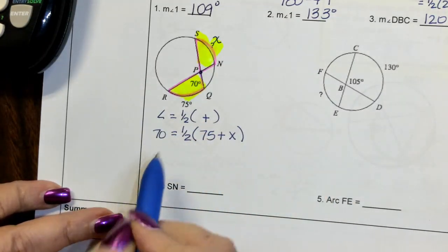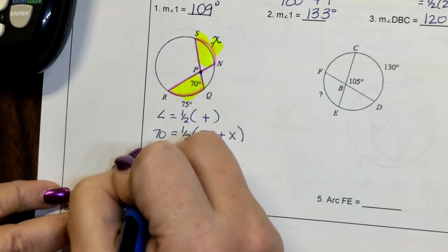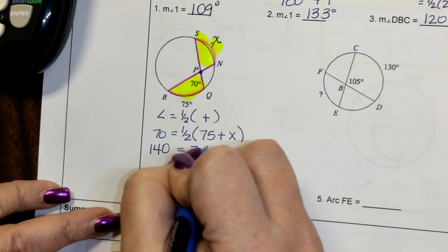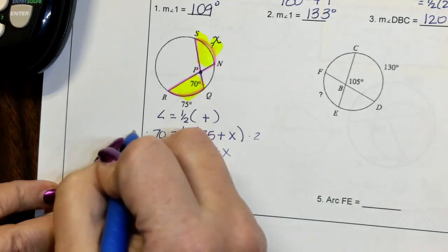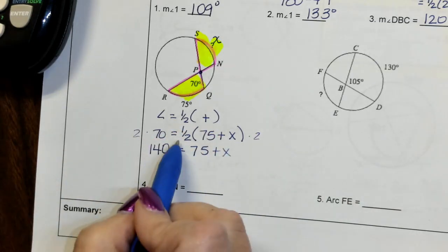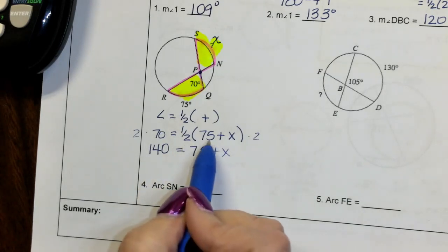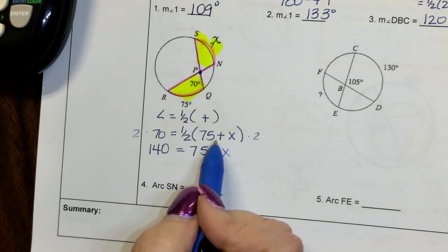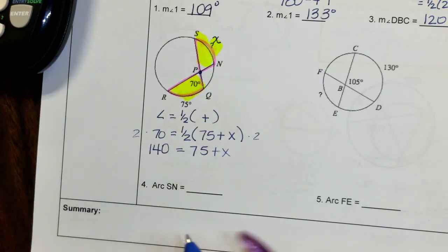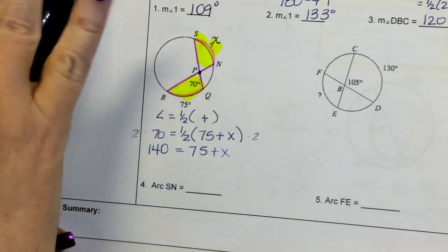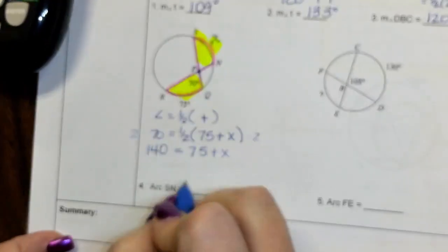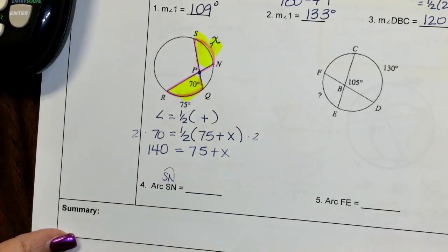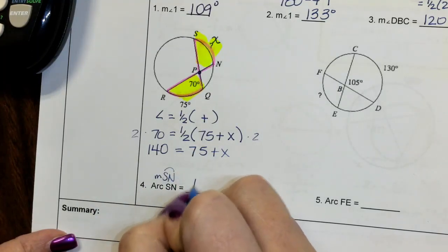And so that helps us to get rid of that one half, right? We're multiplying both sides by two, if you want to think about it. Now, that's not the only way to do it. You can distribute, but then you're going to end up dealing with half of 75, which is a decimal, and then half of x, which is okay. You can do that, but it's just not as pretty. So we just take 140 and subtract 75, and we get that x or arc SN in this case. The computer sometimes has a hard time with that symbol. That's also another way we could do the measure of arc SN. You might see it that way sometimes is 65 degrees.